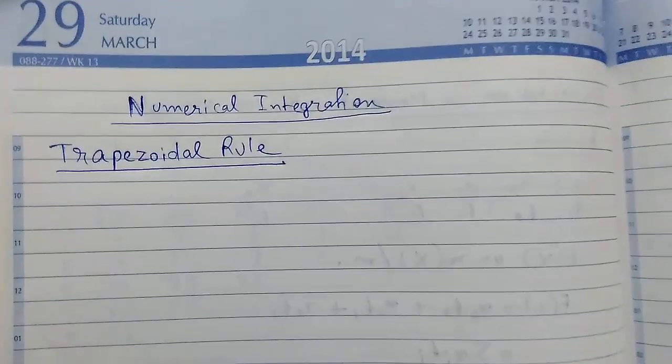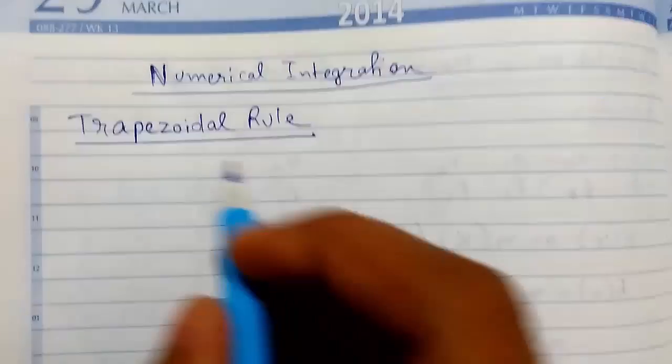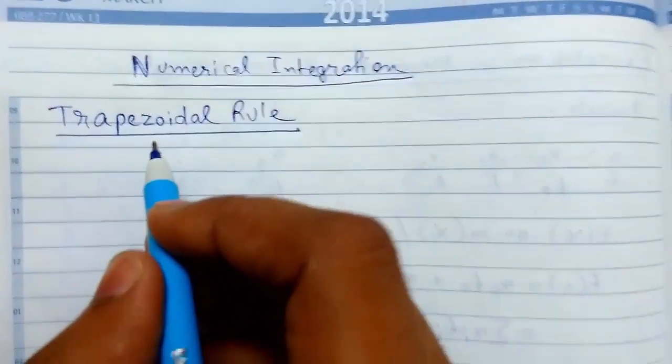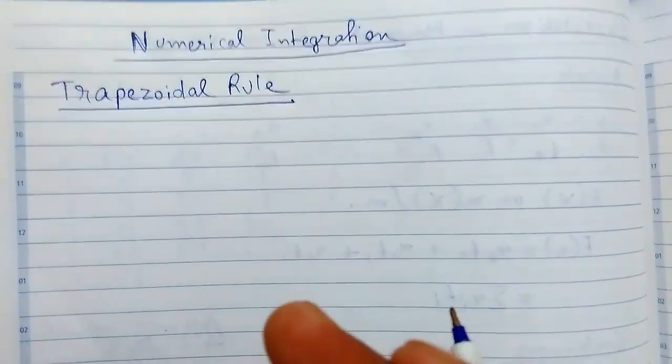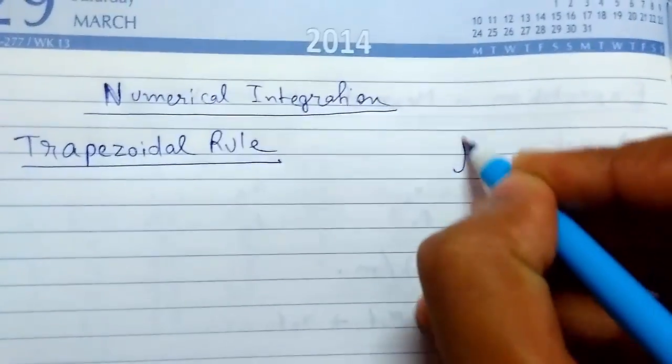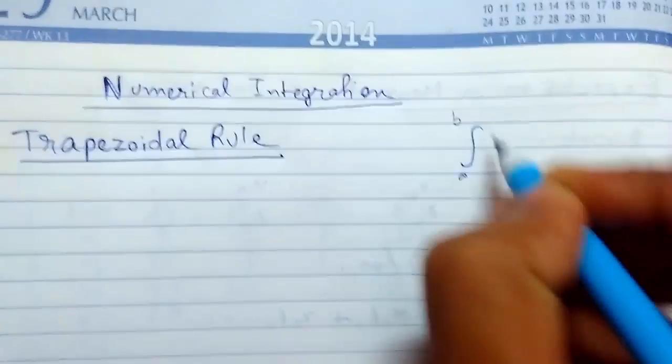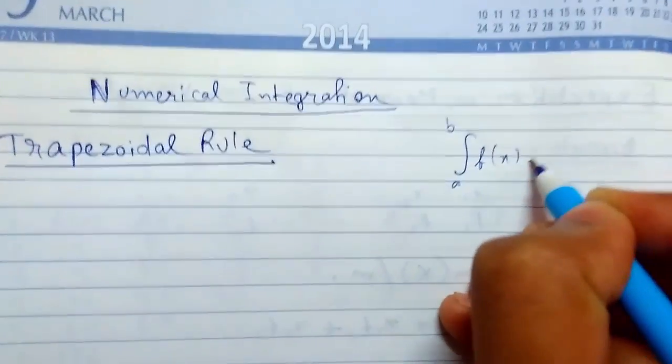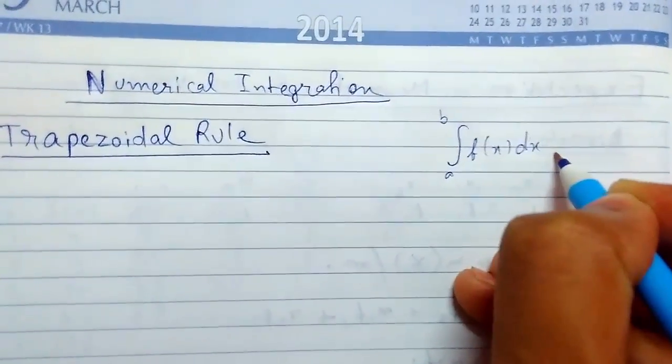Welcome back. Today we'll be starting numerical integration using the trapezoidal rule, a method for approximating a definite integral like integrating from a to b f(x)dx.